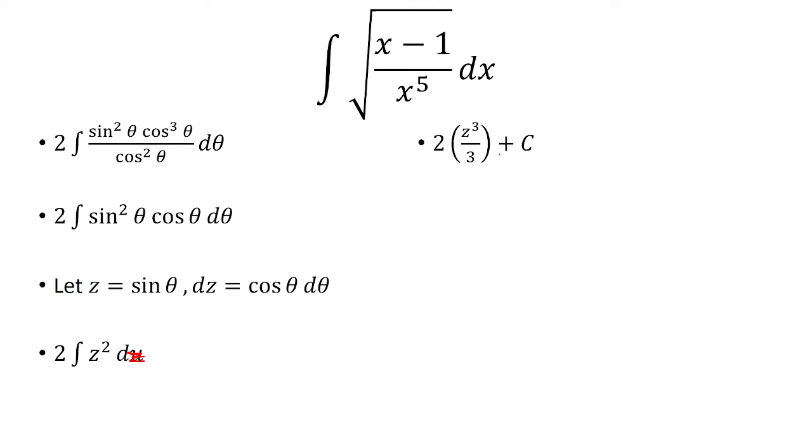Now we just have to replace what z was. Z was sine. So we have 2 thirds sine cubed. And recall that u was equal to secant theta. So if we solve for theta, we have to undo the secant, which means theta is equal to the inverse secant of u. And so that gets plugged in for theta. So take this whole thing and put it in for theta over here. So we have 2 thirds sine cubed of inverse secant of u plus c.